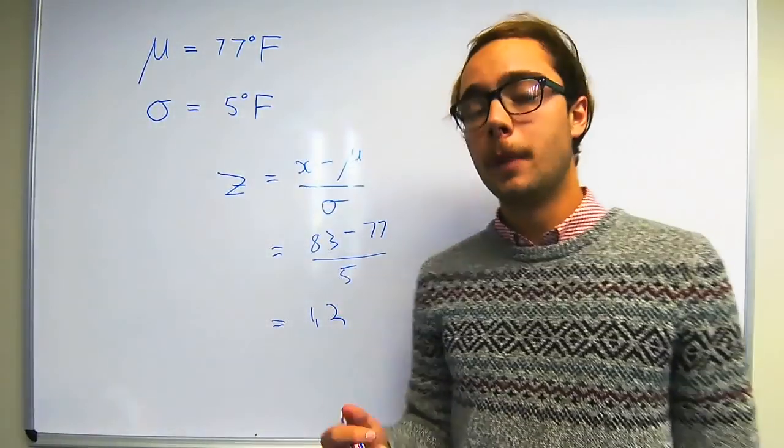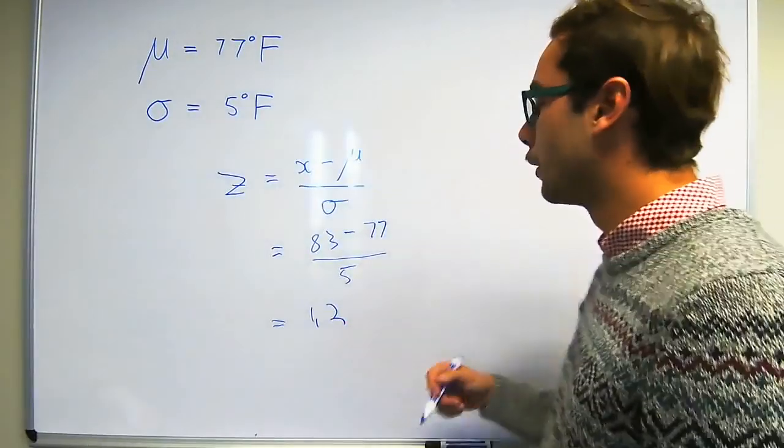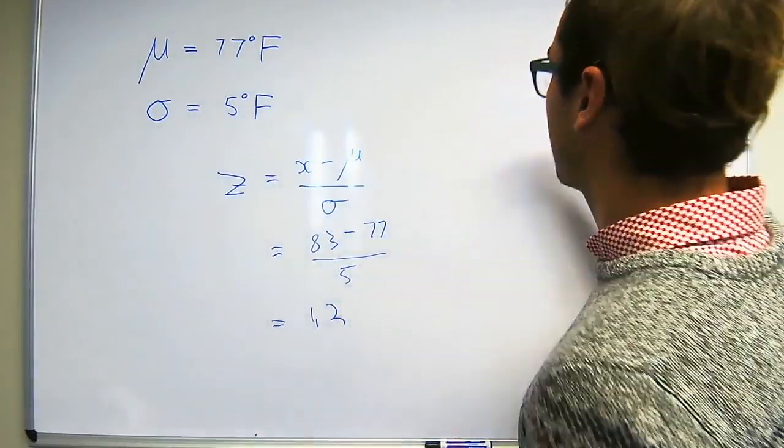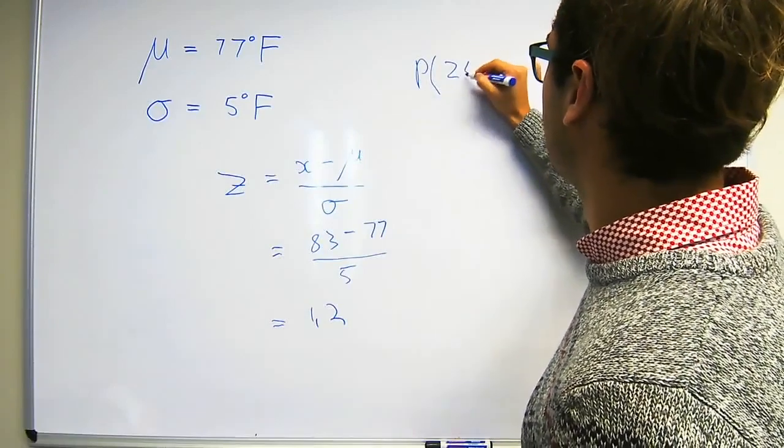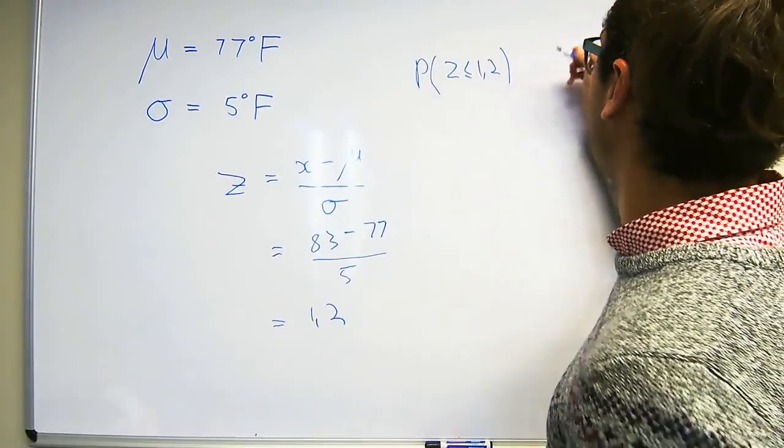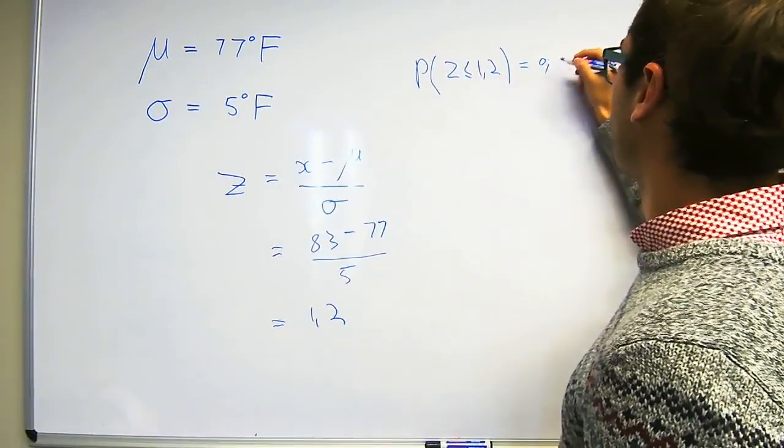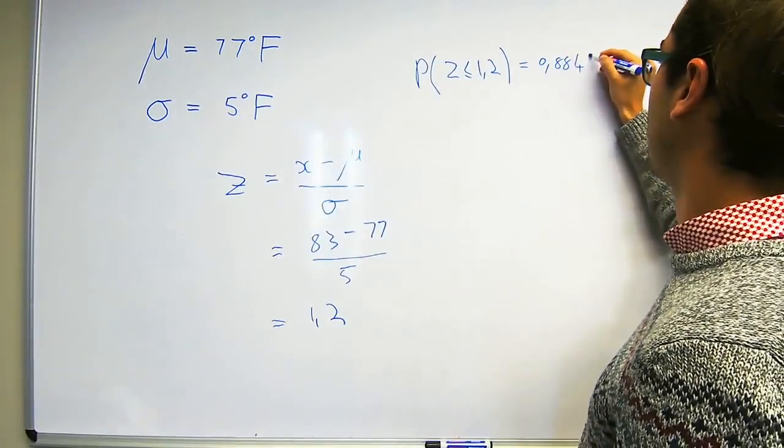Now in order to find the probability we look up this value in the z table. So that gives us the probability that z is less than or equal to 1.2 is equal to 0.8849.